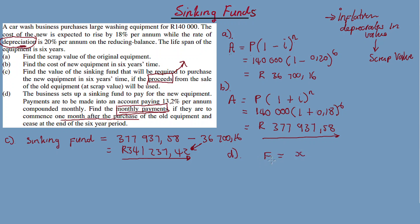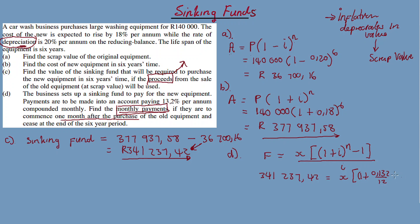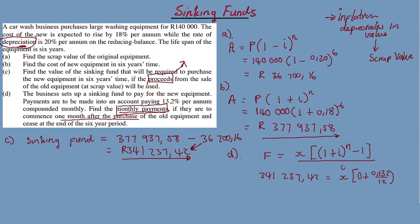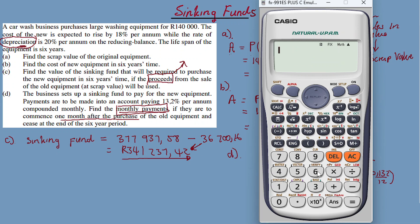The future value annuity formula is: F = X × [(1 + i)^n − 1] / i. We substitute: F = R341,221.42; i = 0.132/12 (13.2% per annum compounded monthly); n = 6 × 12 = 72 months. Since payments start one month after purchase (ordinary annuity), the exponent is 72. So: 341,221.42 = X × [(1 + 0.132/12)^72 − 1] / (0.132/12).